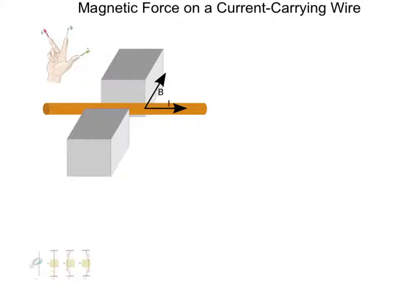And that is exactly what we experience when we do that. If an electric current flows through a wire placed in a magnetic field, each individual electron flowing through that wire has a force exerted on it by the magnetic field. The force is then transferred to the conductor by the collisions the electrons have with the atoms in that conductor. In this picture, we have a wire with a current flowing from left to right, placed in between two magnets so our magnetic field points from one side to the other.